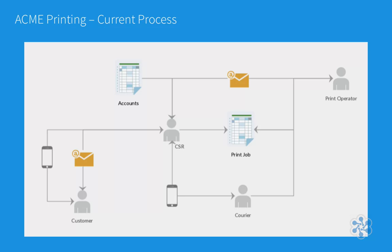If the customer approves the quote and all questions are answered sufficiently, then the print operator prints the plans in the correct quantity. Upon completion of the print job, the print operator packages up the materials and notifies the CSR. The CSR contacts the in-house courier by phone or text message to schedule a delivery, and the courier picks up the materials and delivers it to the customer.